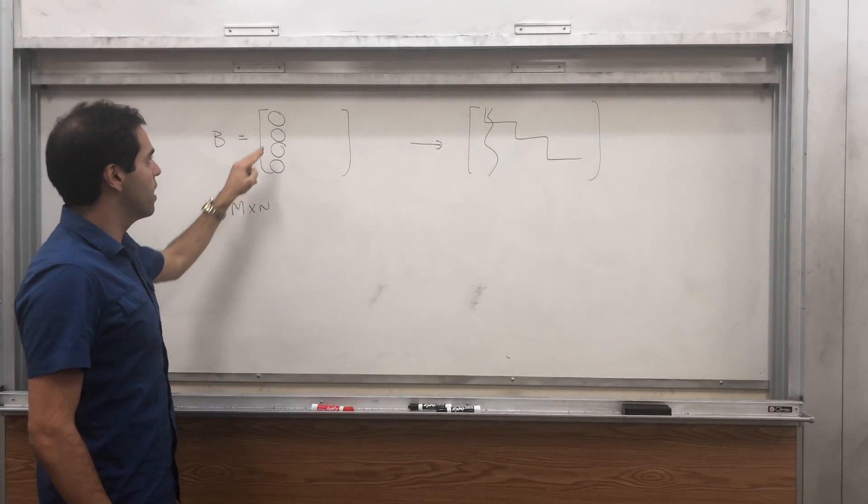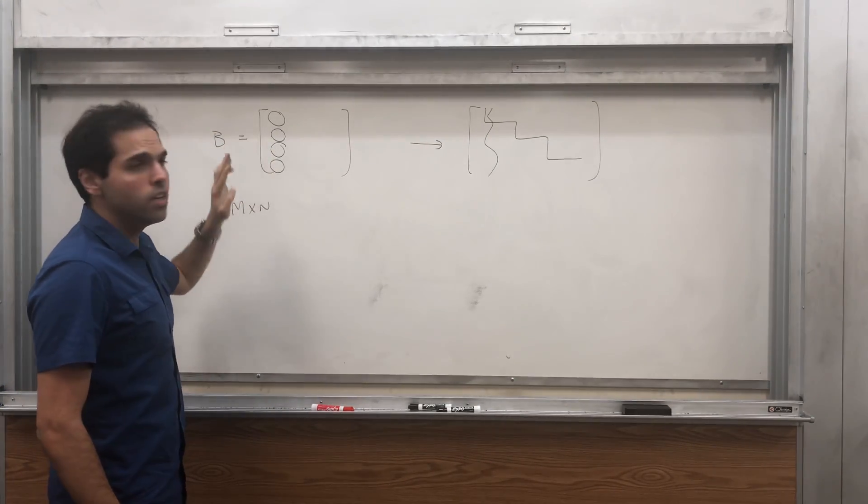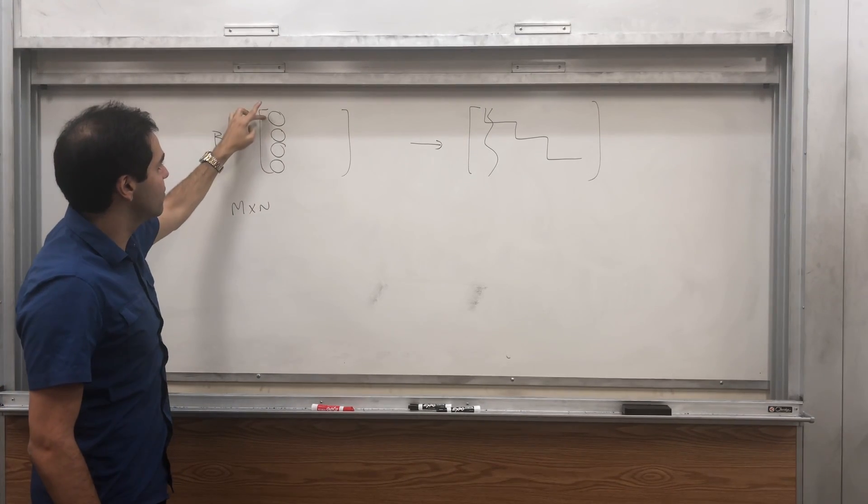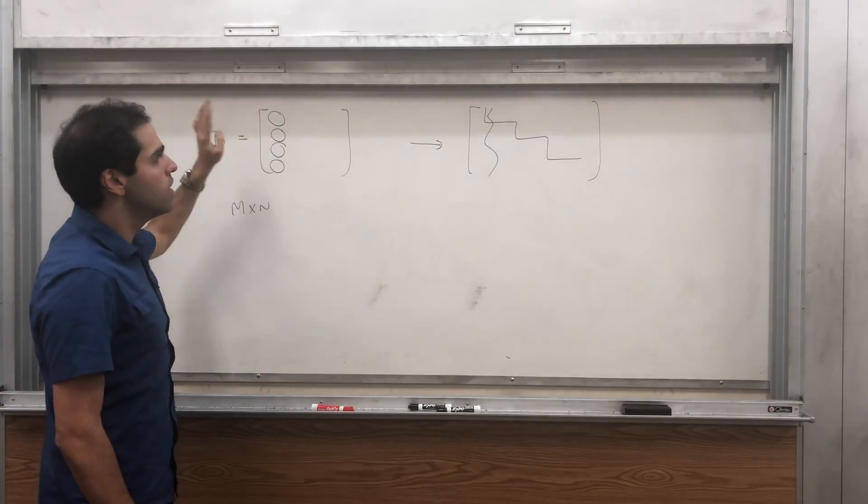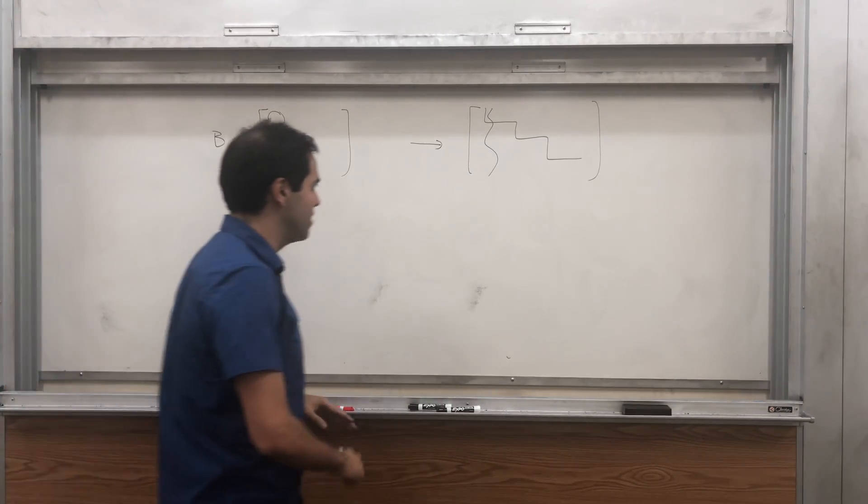Just think of it by the nature of row reduction. Because if you interchange two rows, you just interchange those two zeros, so it'll stay zero. If you multiply a row by a non-zero number, this zero will still stay zero.